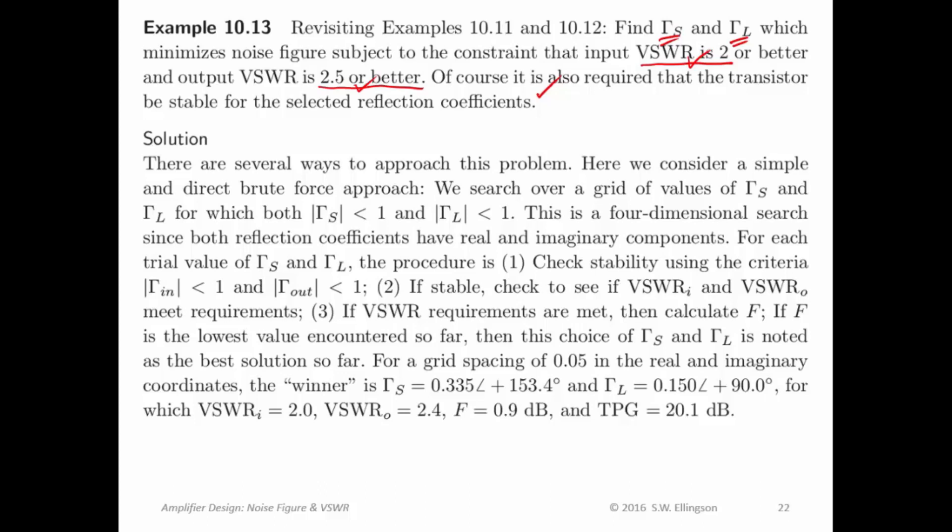So, here we go. In this particular approach, here's what we're going to do. We're going to use the direct brute force approach. If you don't remember what that is, you can go back to a previous lecture where I talk about brute force design, brute force selection of gamma sub S and gamma sub L. And what that involves is searching over a grid of values for gamma sub S and gamma sub L and then seeing what you get for each one of those choices.